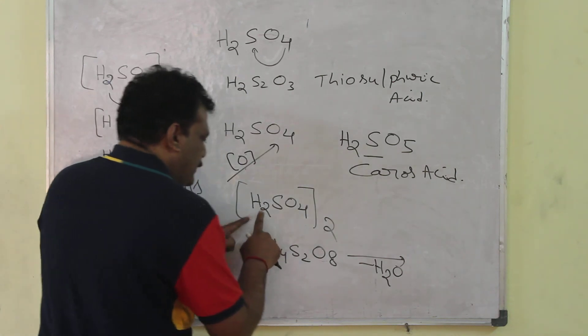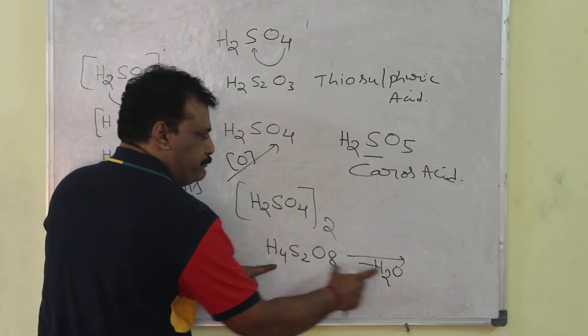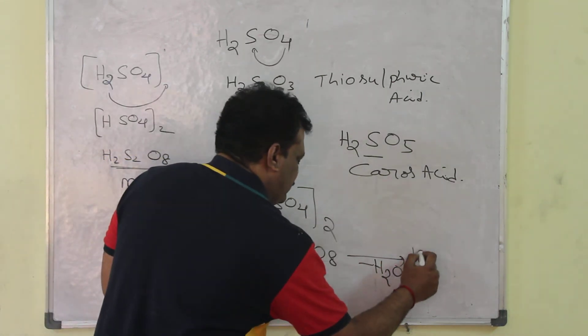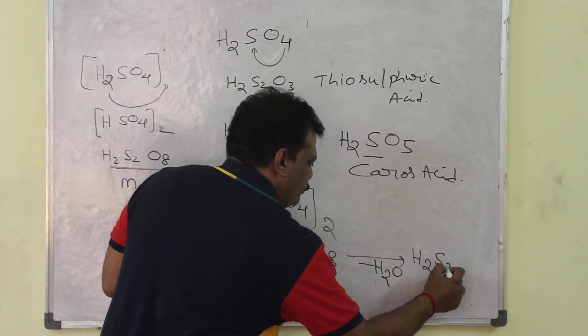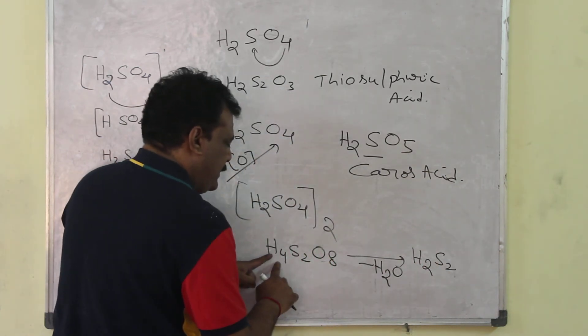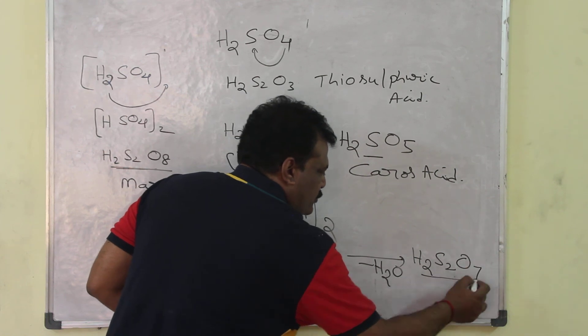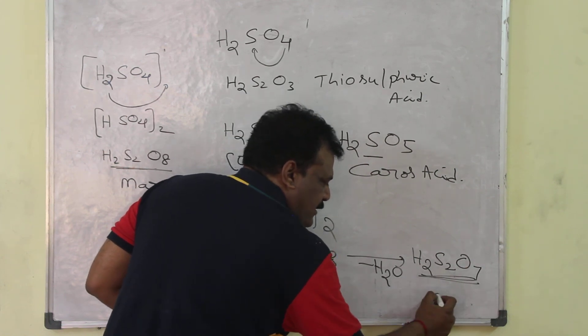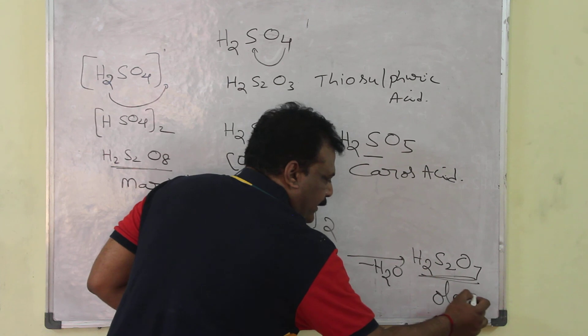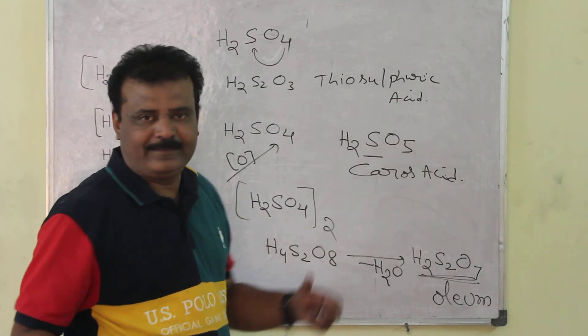Now, H4S2O8 minus H2O equals H2S2O7. This is also known as pyrosulfuric acid, or polysulfuric acid. That's it.